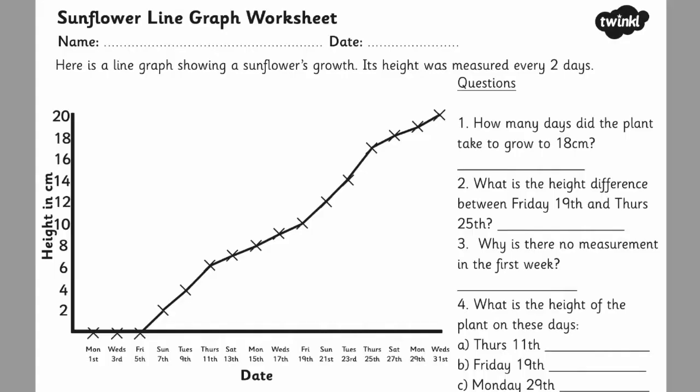Learners will be encouraged to think about why the data is the way it is. Like in this example of a line graph measuring a sunflower's growth, there are no measurements in the first week. But why? Well, it takes a little bit of time for a sunflower to grow. Questions like this encourage learners to think about data as more than just numbers but as information that reflects real life.